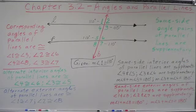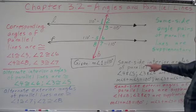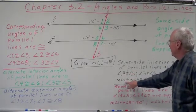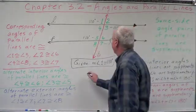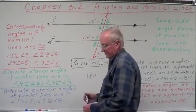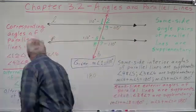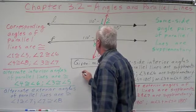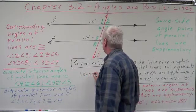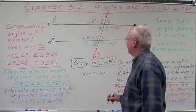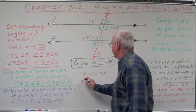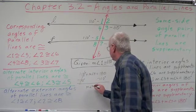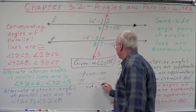Now let's see what else we can get. Same side interior angles of parallel lines are supplementary. So, angles 4 and 5: the measure of angle 4 plus the measure of angle 5 equals 180. We know that 110 plus the measure of angle 4 equals 180. So we subtract 110 degrees from both sides, and we're left with measure of angle 4 equals 70 degrees.